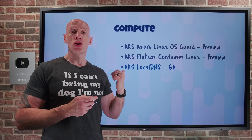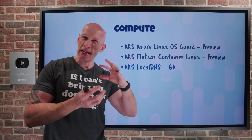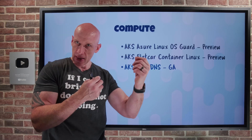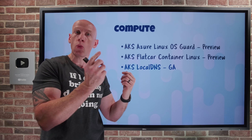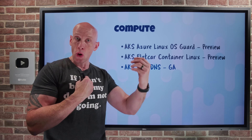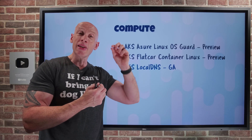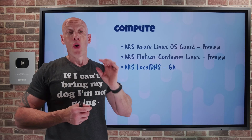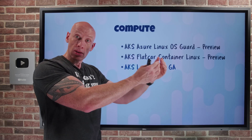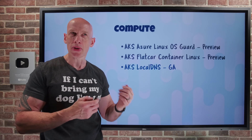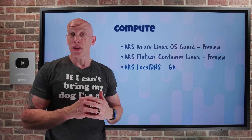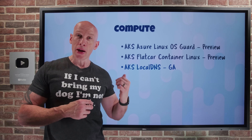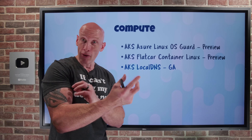AKS Local DNS has gone GA. It provides a DNS proxy capability on each node of the node pool, caching DNS responses and servicing requests within the node. This reduces latency for pods on the node, reduces load on upstream DNS servers, and if there's a problem with upstream DNS servers, it will continue to service requests — improving resiliency. It's completely transparent to the application; nothing needs to change in your app. It runs as a local system service on the nodes.